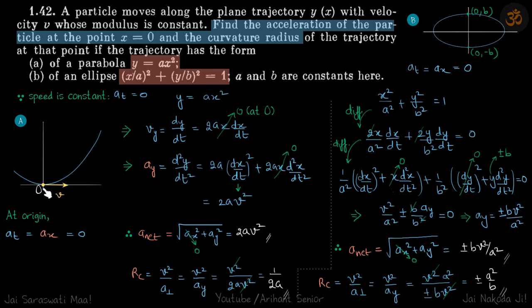At x equal to 0, the particle will be at its bottommost point of the parabola. For the ellipse, at x equal to 0, it will be at either the top or bottom point. We need to find the acceleration of the particle and the radius of curvature at these points.